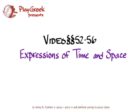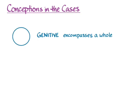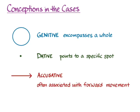This video covers the different expressions of time and space that Hanson and Quinn's Greek Intensive course covers in sections 52 to 56, on pages 147 to 149. First, let's think about the non-nominative cases and some of the conceptions inherent in them. The genitive is used for words that encompass a whole when you're talking about something smaller than that whole. The dative points to a specific spot in time or space. And the accusative is often associated with forward movement.